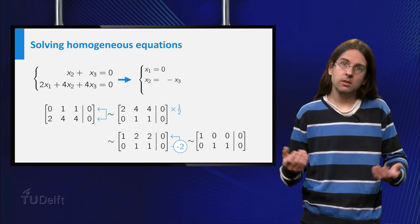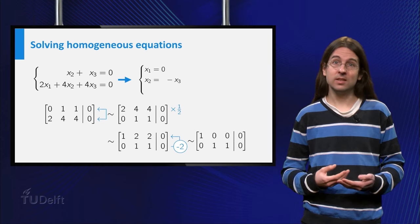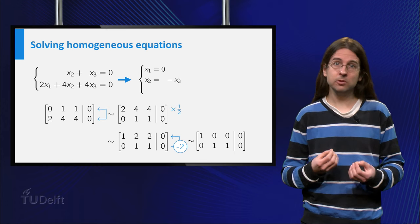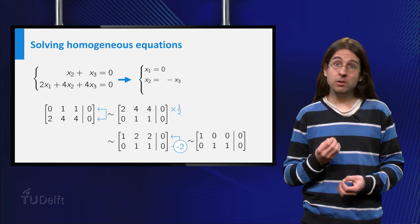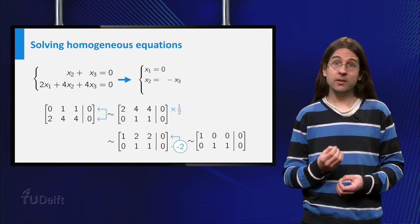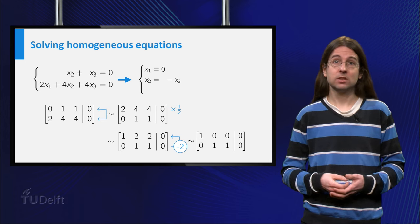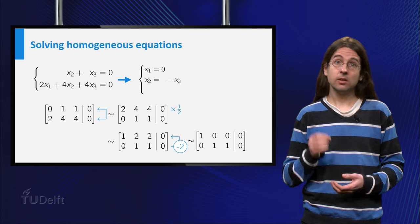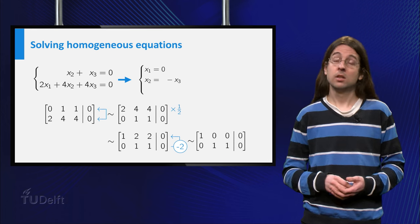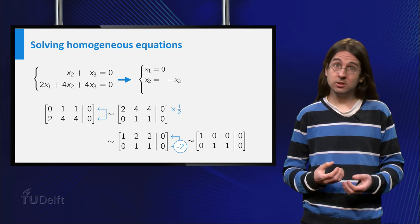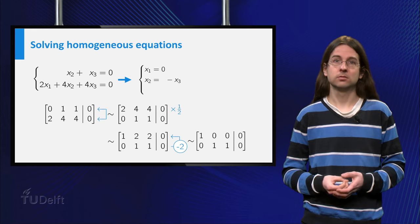In this way we see that our system must be consistent — well, we already knew this, because we had already seen that it had the trivial solution. If every column in the left part of the augmented matrix contains a pivot, there is a unique solution. This unique solution must be the trivial solution, the zero vector.